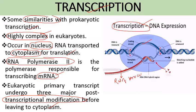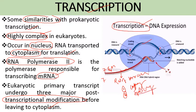RNA processing occurs in three steps. The first is the capping process, in which a 7-methylguanosine group is added at the five-prime end. The second process is splicing, in which non-coding sequences — the introns — are removed. This leads to the formation of a structure known as the spliceosome, and this action is performed by small nuclear RNPs (snRNPs).